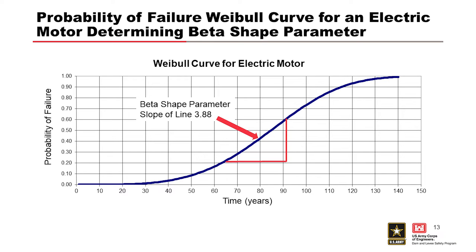So, a really high number, like 4 or 5, means once it reaches that characteristic life, you'll start to see a lot of failures pretty quick.